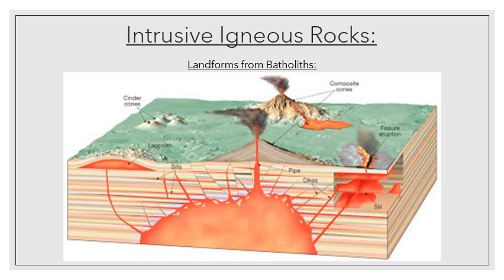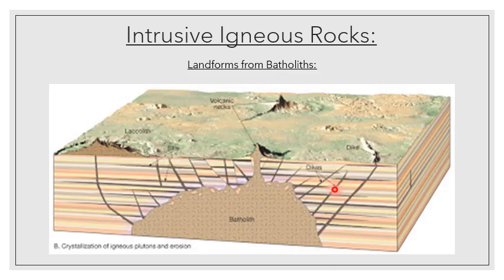Something that looks like this. Here we've got a solidified batholith. And because it's so far below the surface of the earth, it cooled down really slowly, allowing for the crystallization of granite.